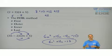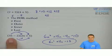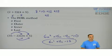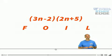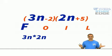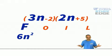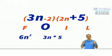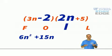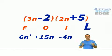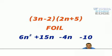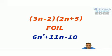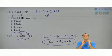Your answer would be 6n squared plus 11n minus 10. That is how you multiply a binomial times a binomial — two terms times two terms, we call it FOIL. So: First, 3n times 2n gives 6n squared. Outer, 3n times 5 gives 15n. Inner, negative 2 times 2n gives negative 4n. Last, negative 2 times 5 gives negative 10. After FOIL, combine like terms: 6n squared plus 11n minus 10.